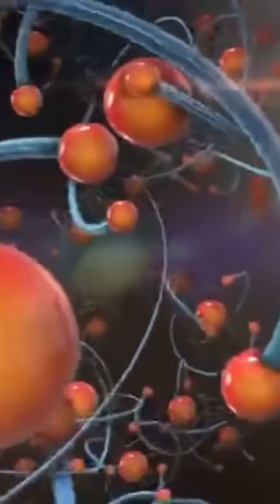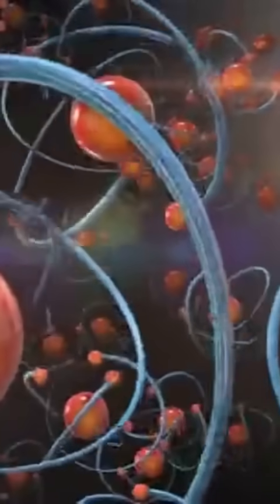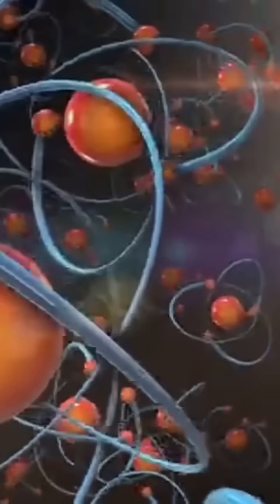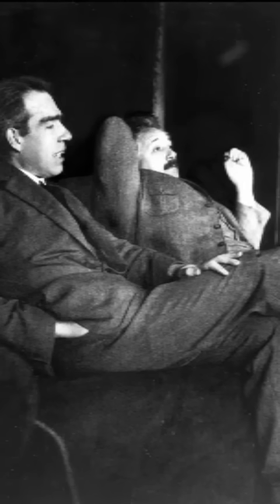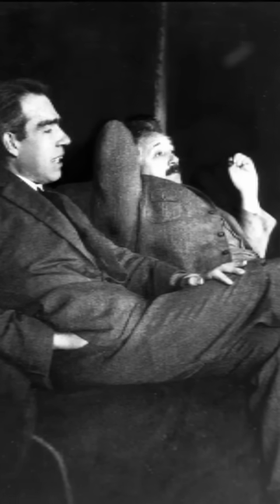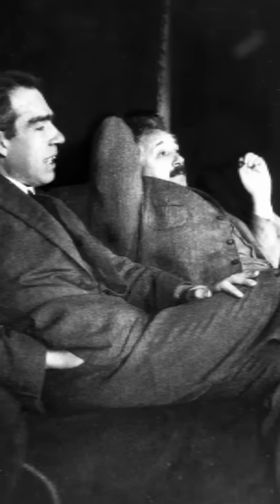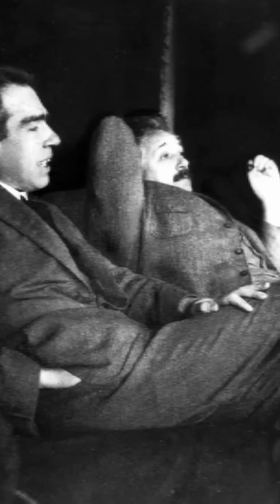Bohr studied physics at the University of Copenhagen, where he quickly distinguished himself. His early research focused on the properties of metals and electron theory. In 1911, he earned his Ph.D., presenting work that already showed his talent for combining experimental results with bold theoretical thinking.